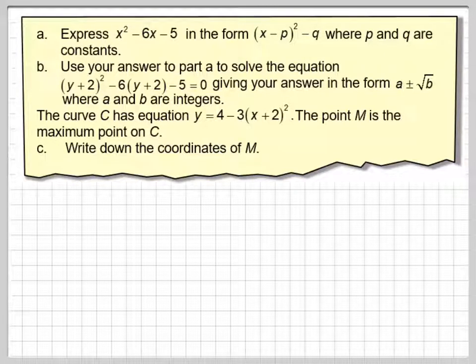This video is about completing the square and a disguised quadratic, and then using the completed square form to find a maximum or minimum value of a quadratic function. So it says, express x² - 6x - 5 in the form (x - p)² - q, where p and q are constants.